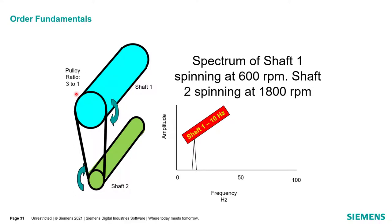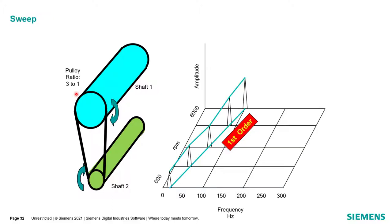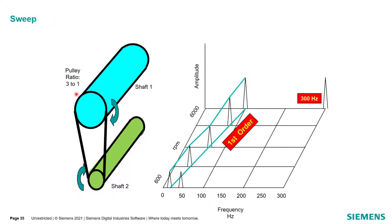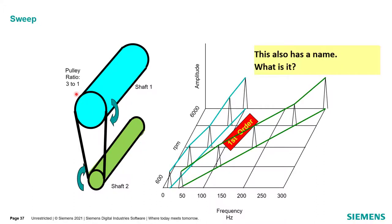We can do the same exercise — go through given speeds for shaft one and shaft two and plot amplitudes at each frequency on that three-dimensional plot. Once we get the amplitudes across all speeds and frequencies, we have another line or cut. What would that be called? If shaft one was first order, shaft two would be third order, because for every one rotation of shaft one, we get three rotations of shaft two.